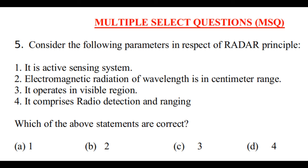In multiple select questions, if you mark all the correct options only then do you get full marks. If out of 3 correct options you mark only 2, you get 0 — there is no partial marking. For this question, statements 1, 2, and 4 are correct. So you have to mark option A, option B, and option D.